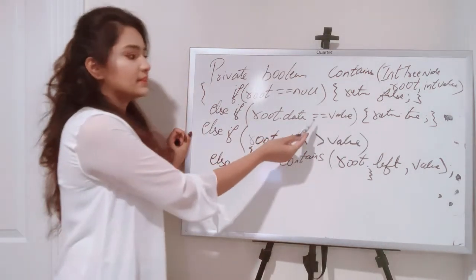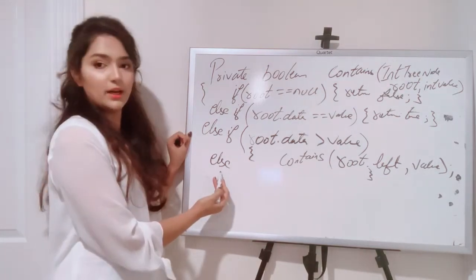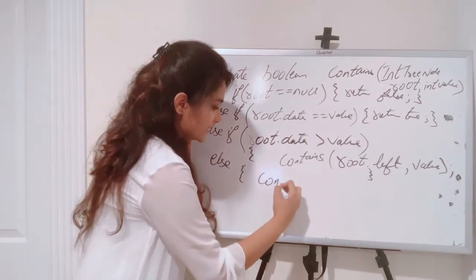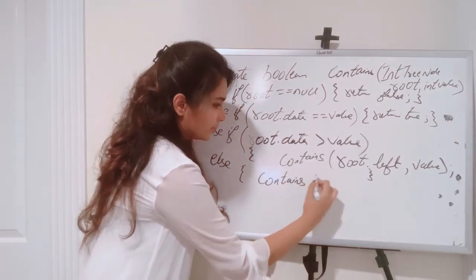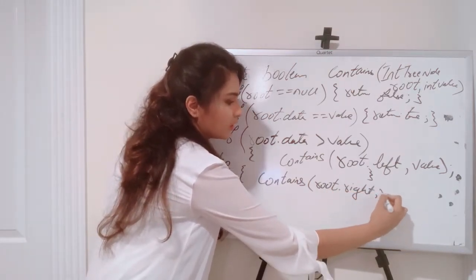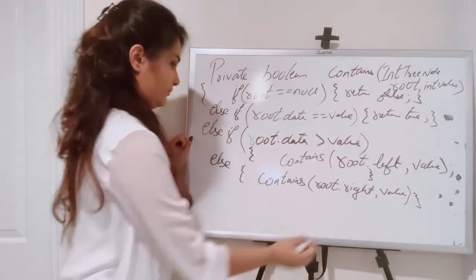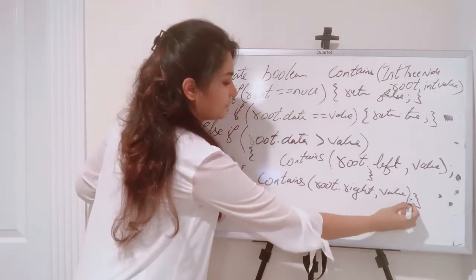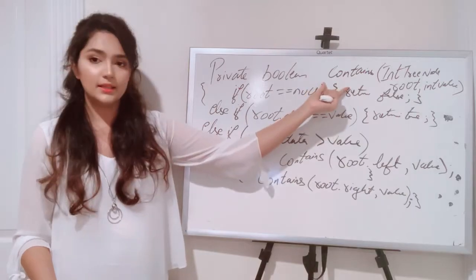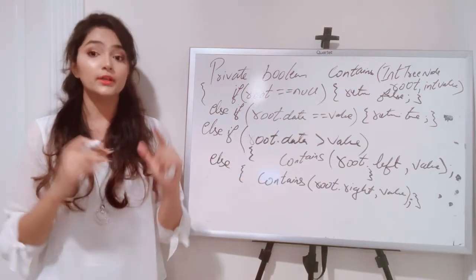The last case covers when the value is greater than root.data, so we use else — not else if. In the else block, we return contains(root.right, value), going to the right side of the tree. That completes the coding for our contains method to check whether a value exists in the tree.